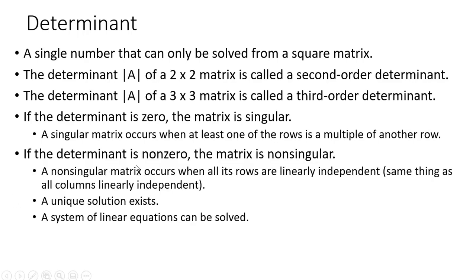If the determinant is non-zero, the matrix is non-singular. A non-singular matrix occurs when all its rows are linearly independent, same as all columns being linearly independent. You'll have a unique solution. A system of linear equations, for example, can be solved when we're dealing with a non-singular matrix.